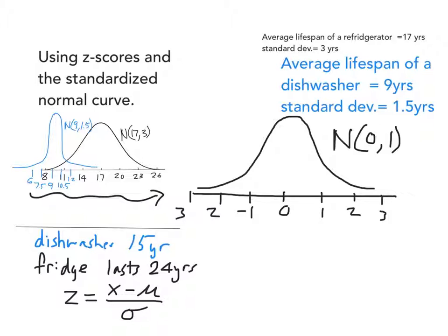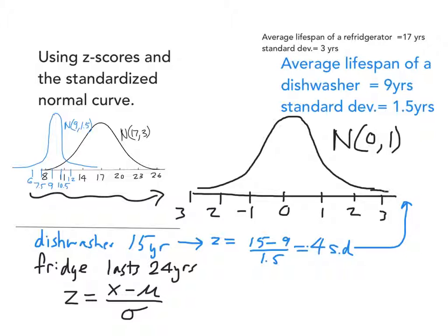For the dishwasher lasting 15 years, how many standard deviations is that above the average of 9? Following the formula, the z-score is (15 − 9) ÷ 1.5, which equals 4. That's four standard deviations above the average. We can take this and find it on the standardized normal curve — a z-score of 4 puts us way out in the tail, meaning that dishwasher lasted very, very long. It's very rare for something like that to happen.